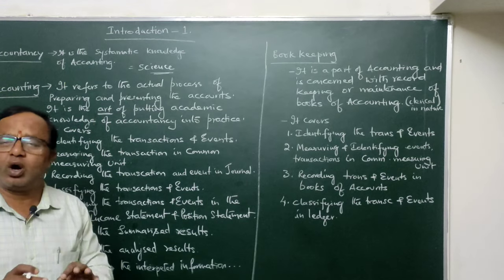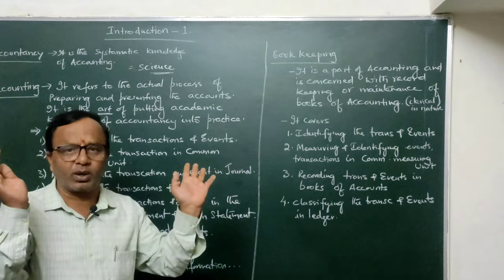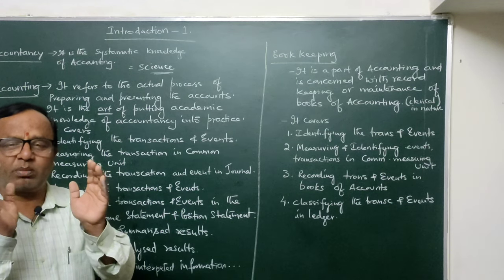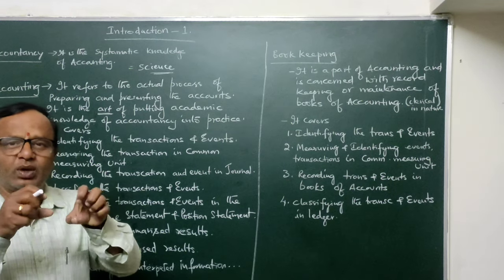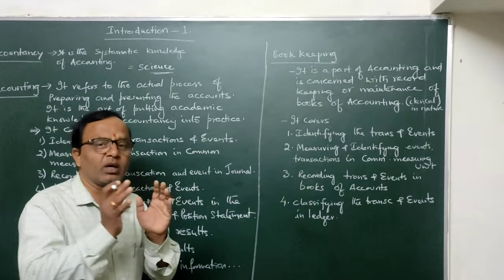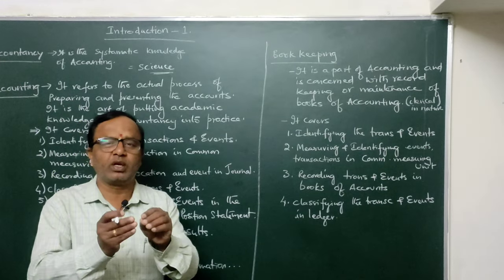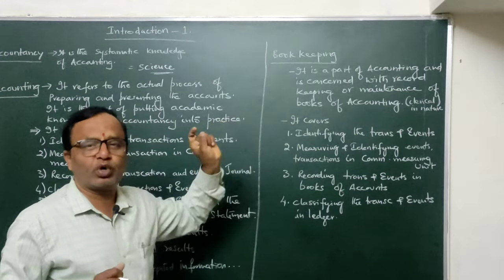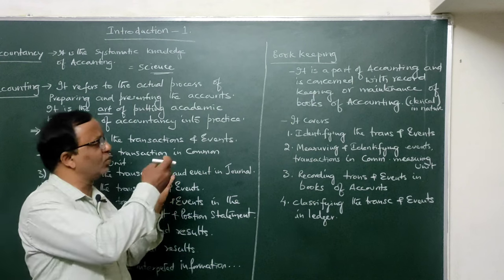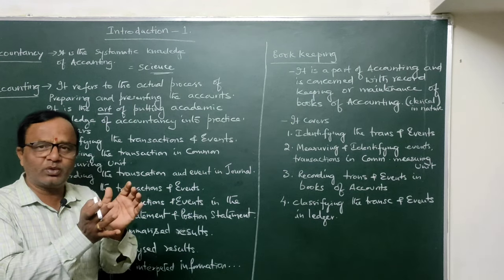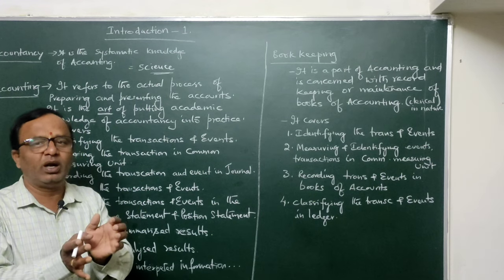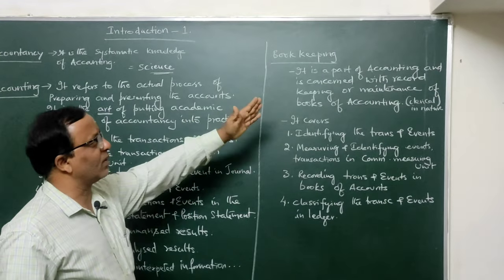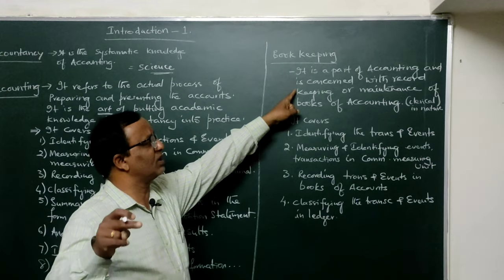Now, what is bookkeeping? In ordinary language, bookkeeping is maintaining books. Whatever set of books are maintained in order to record business transactions and events — that is bookkeeping. However, bookkeeping does not mean simply keeping the books; certain other aspects are also involved. Bookkeeping is a part of accounting. The person doing accounting should have books of accounts where information relating to the business is recorded so that other aspects of accounting work can be carried on.